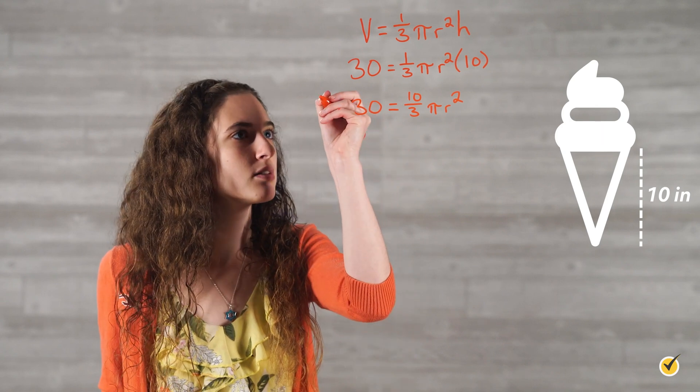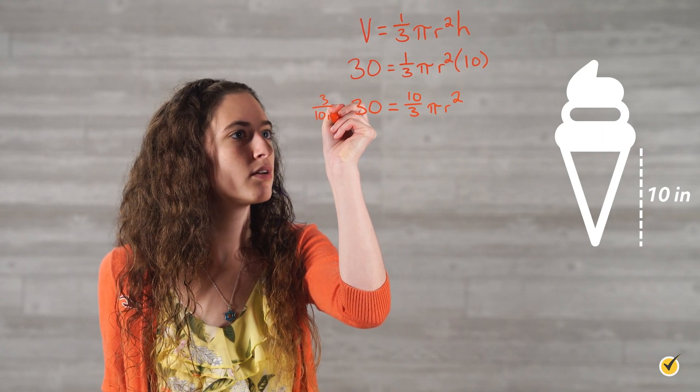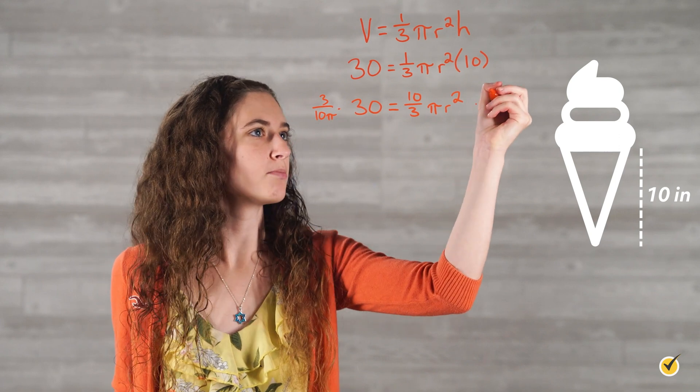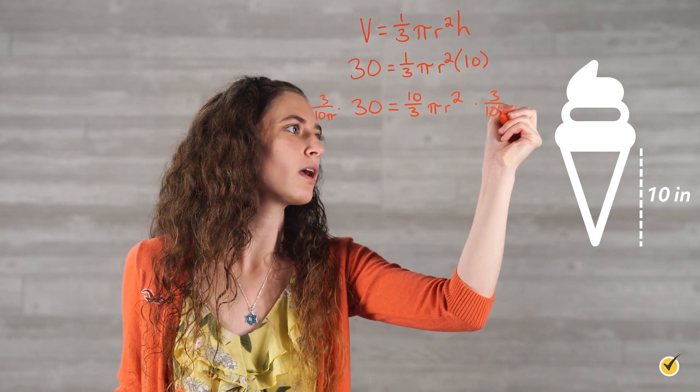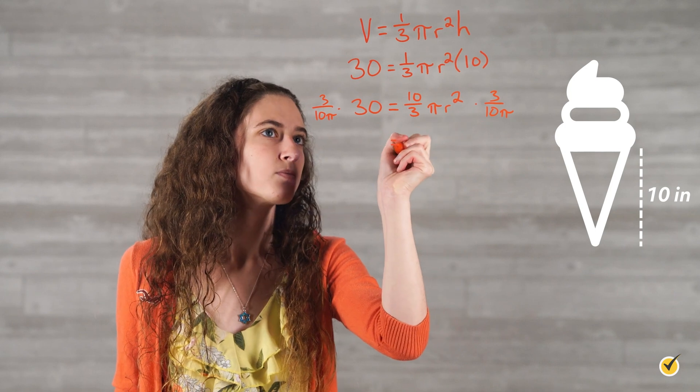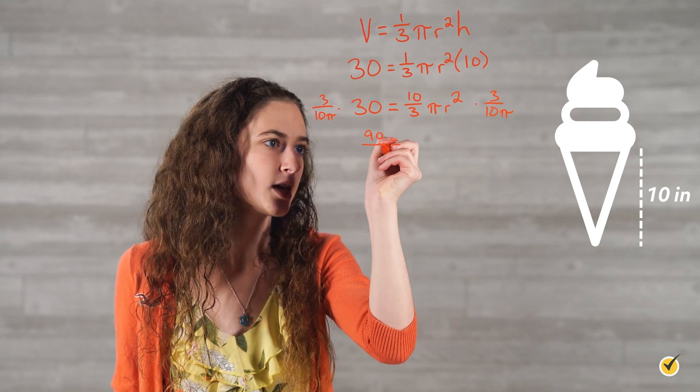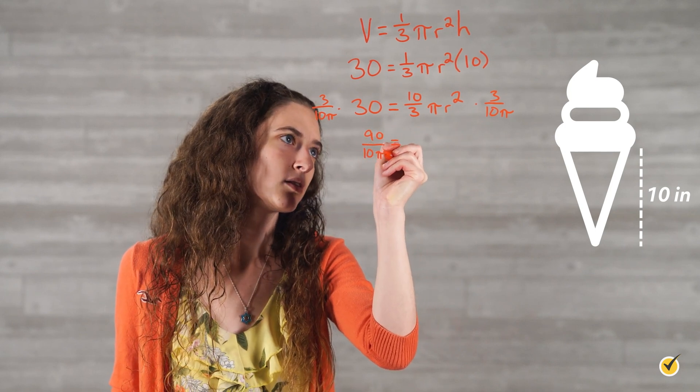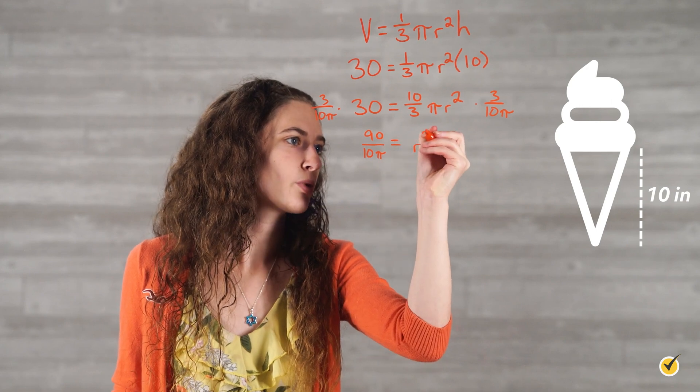When we do this, multiply by 3 over 10 pi on the left, 3 over 10 pi on the right, and that gives us 90 over 10 pi is equal to r squared.